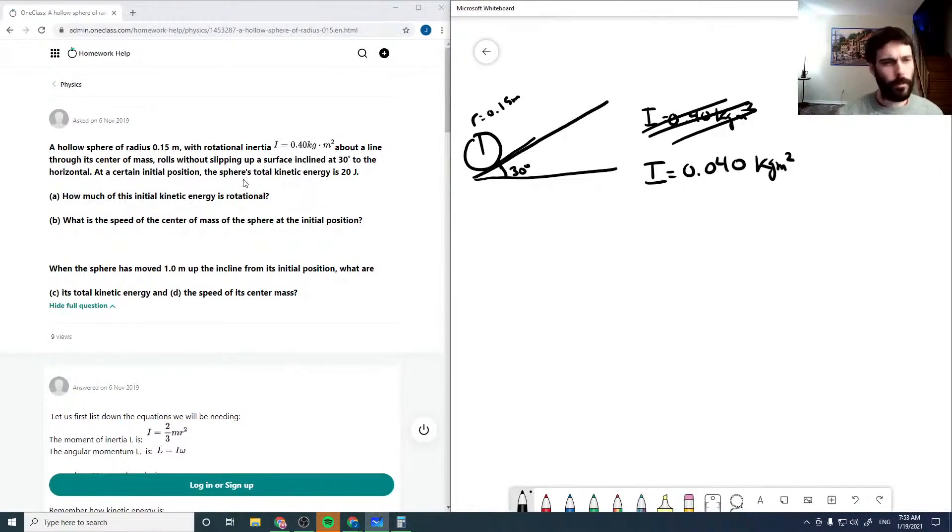Now at a certain initial position, the sphere's total kinetic energy is 20 joules. So KE is 20 joules.